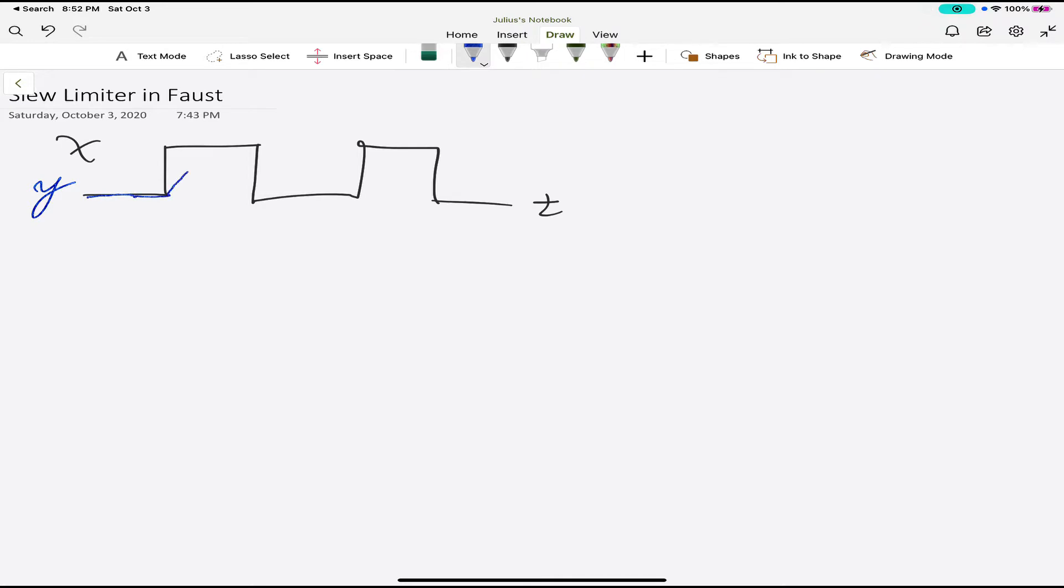This is the slew limitation, it's a maximum slope and it catches up and follows it, and then it gets slew limited in the other direction. This happens in op amps, it's just a fundamental limitation on how fast the output can change. So how do you simulate that in Faust? It's a fun little problem.